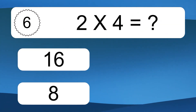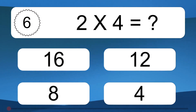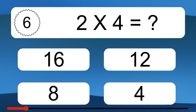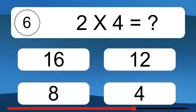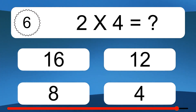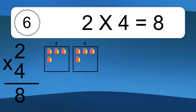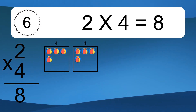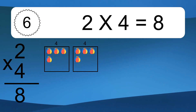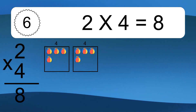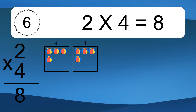2 times 4 equals what? 2 times 4 equals 8. We have 2 boxes, and each box has 4 colorful balls inside. If you count all the balls in all the boxes together, you will have 2 times 4 balls. This equals 8 balls.